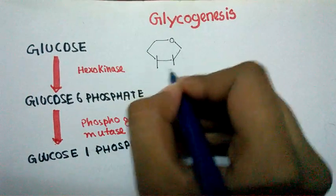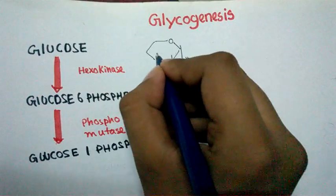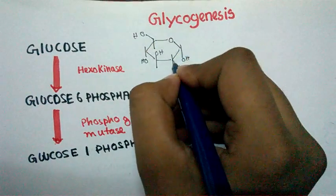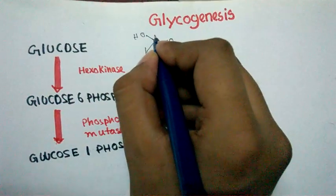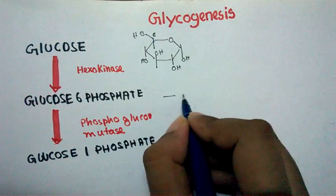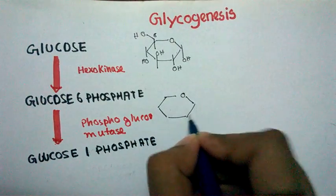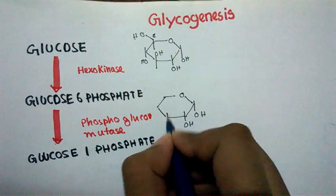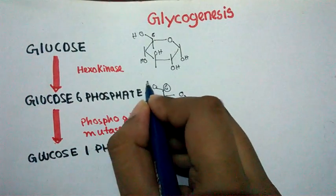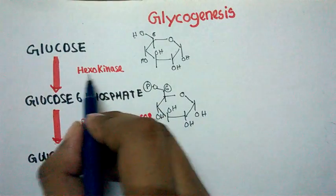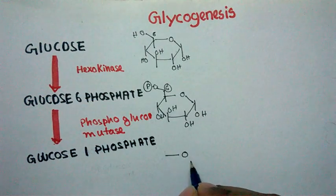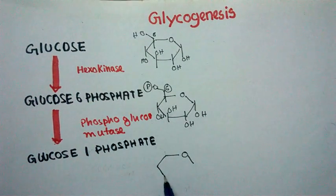Now if we talk about the structure of glucose — glucose somewhat looks like this. Here is the basic structure of glucose with carbon positions 1, 2, 3, 4, 5, and 6. In the next step, glucose would be phosphorylated at its 6th carbon to form glucose-6-phosphate. Here at the 6th carbon of glucose we attach a phosphate group via the hexokinase enzyme.